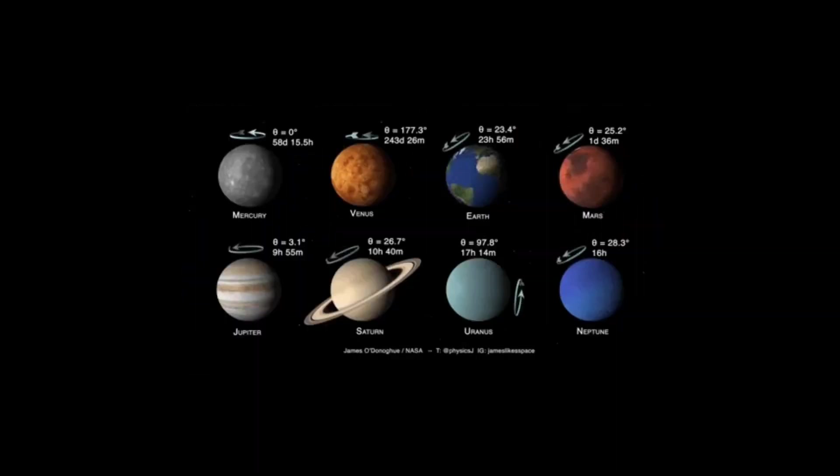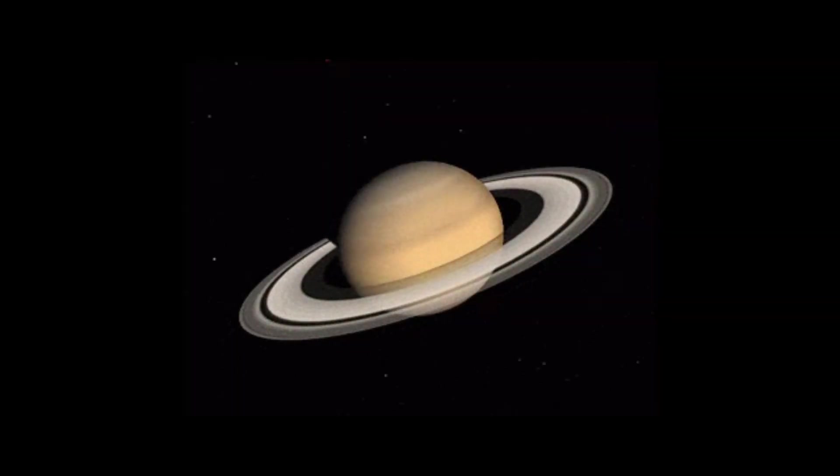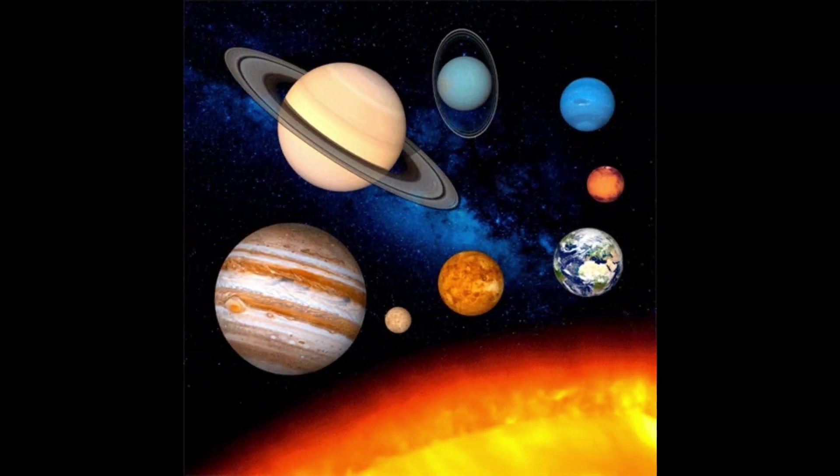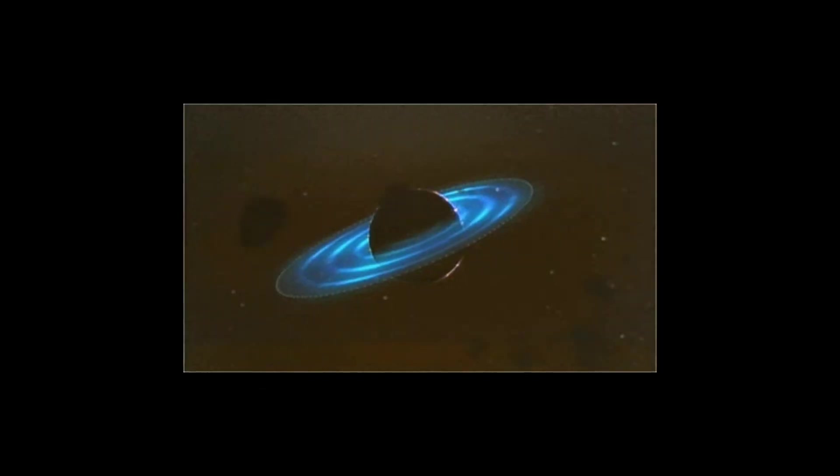Although Saturn is the second largest planet in our solar system in terms of mass, its density is last compared to the planets in our solar system. It is so light that it could float in water, if there was a body big enough.